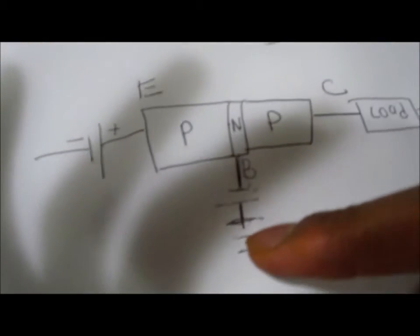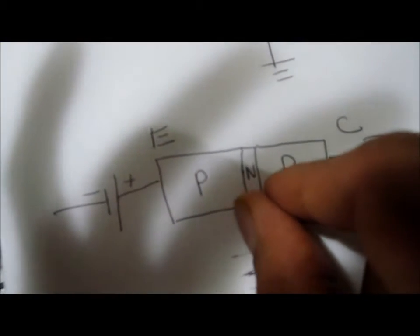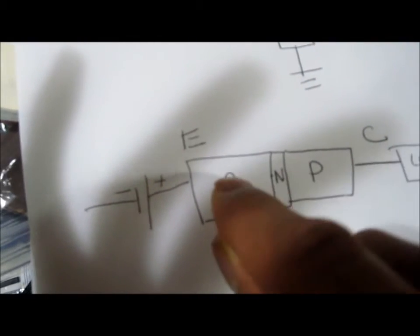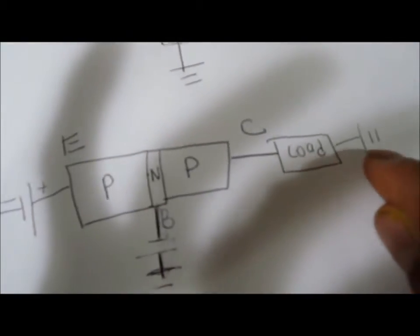When current flows out of the base region, it shrinks the N region. By supplying positive voltage to the emitter terminal, it produces a force so the holes in the P region can flow through. As the N region shrinks, it gives the conduit so the holes can go across and power the load.